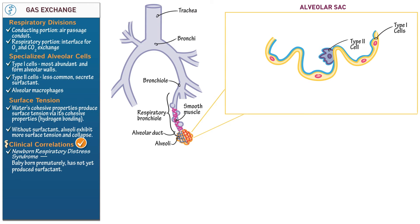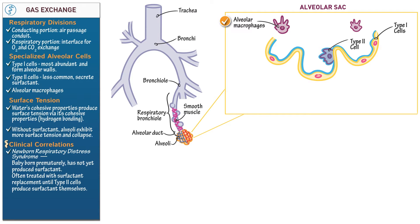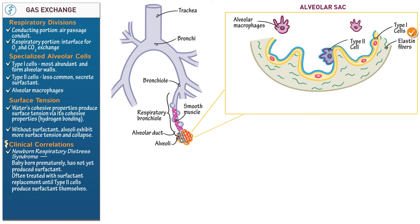These newborns are treated with surfactant replacement until their type II cells produce surfactant themselves. Now indicate that macrophages circulate within the alveolar lumen to clean up debris and perform immune functions. Next, show that interstitial fluid bathes the alveolus and the capillaries that surround it. Then draw elastin fibers within the interstitial fluid, which assist in pulmonary elastic recoil and the efficient expiration of air.